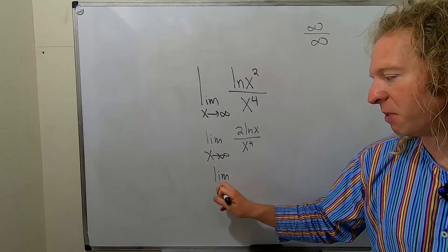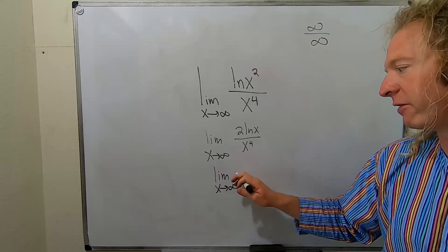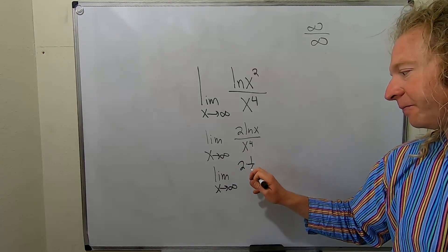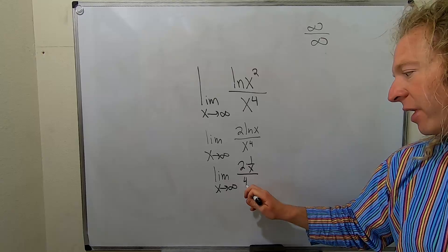Whenever you have infinity over infinity or zero over zero you can use something called L'Hopital's rule. L'Hopital's rule says that you can just take the derivative of each piece. The derivative of ln x is one over x, and the derivative of x to the fourth is four x cubed.